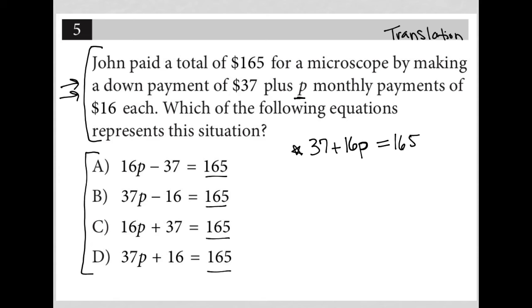The question goes on to say which of the following equations represents this situation. Well, it looks like I have my information out of order a bit. So if I put 16P and then plus 37 equals $165, that would perfectly match with choice C. So choice C is the correct answer here.